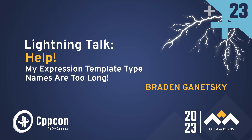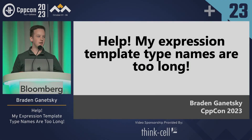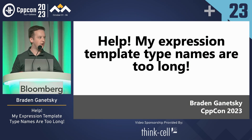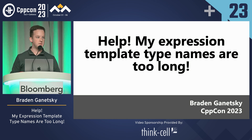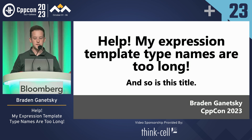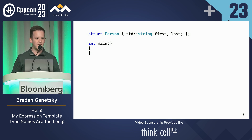Hi everyone. My name is Brayden Genetsky, and I've been writing a parser combinator library — as if there aren't enough of those. I've run into some compile problems: my expression template type names are too long, at least I think so. And so is the title of this talk. I'll give a quick demonstration of how my library works. The syntax is kind of like Boost Spirit, but not really — loosely inspired.